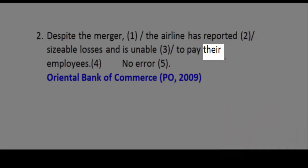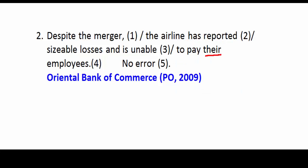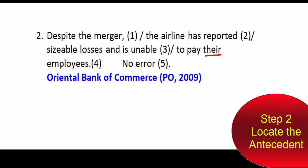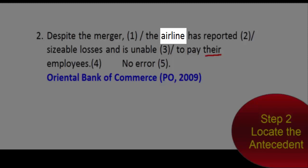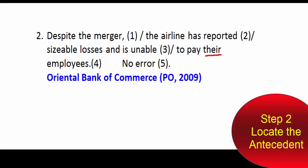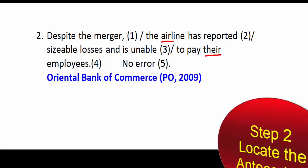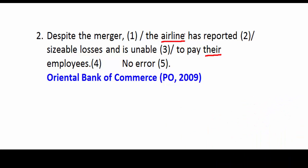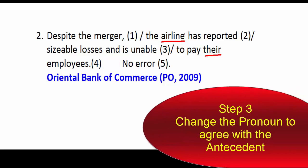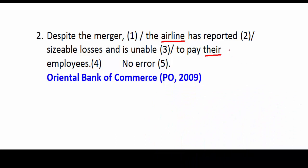For the next question, the pronoun is clearly 'their.' The sentence says unable to pay their employees — whose employees? Clearly it is the airline's employees. Therefore, the antecedent of the pronoun will be 'airline.' Because 'airline' is singular, the pronoun here will also be singular — it will be 'its.'